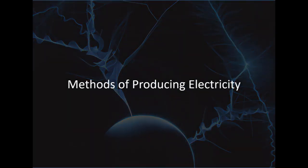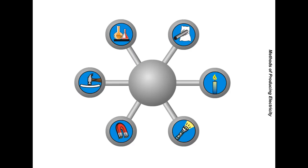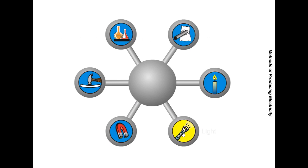Methods of Producing Electricity. In this learning activity, you'll review the six different ways in which electricity is produced: chemical, friction, heat, light, magnetism, and pressure. Let's click on the pictures below for a detailed description of each method.